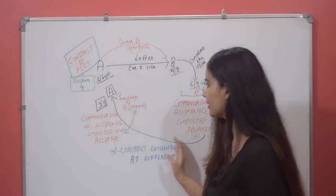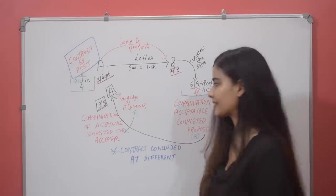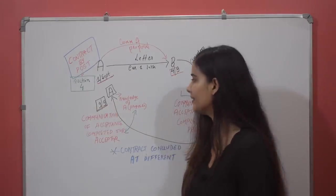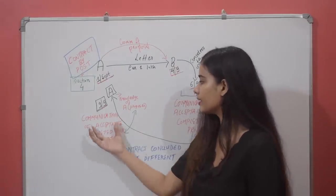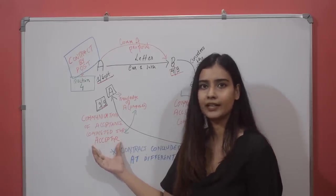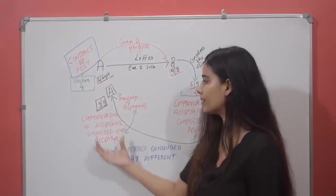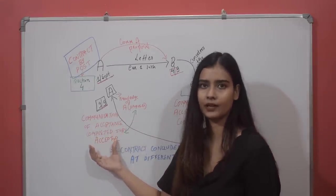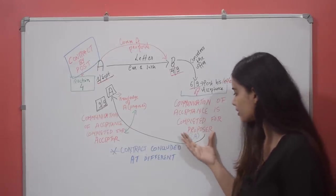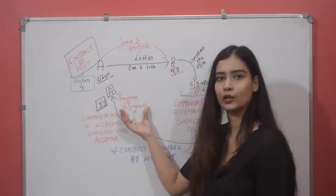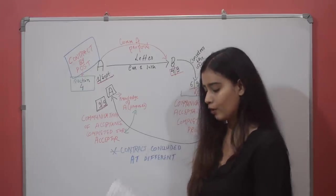He posted his letter, and this letter reached A — the proposer — on 9th September. Now, when the letter reaches the proposer on 9th September, the communication of acceptance is completed for the acceptor. Jaise hi proposer ko letter milega, jaise hi proposer ke knowledge mein aa jaayega ki B ne apna acceptance bhej diya hai, us time pe communication of acceptance is completed for the acceptor.